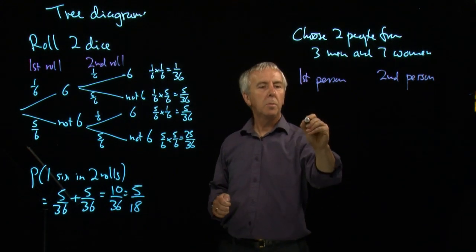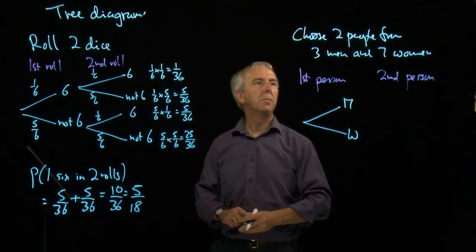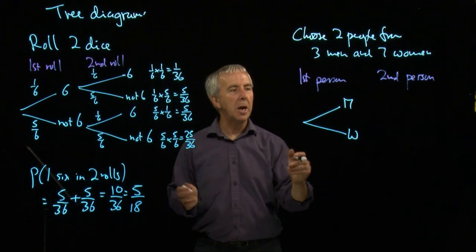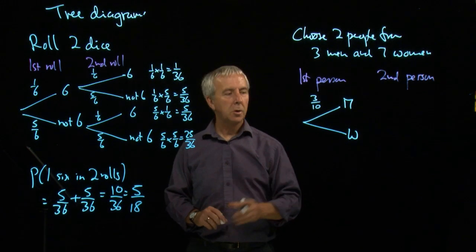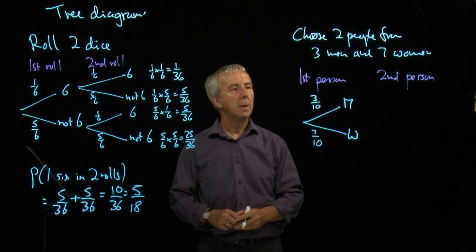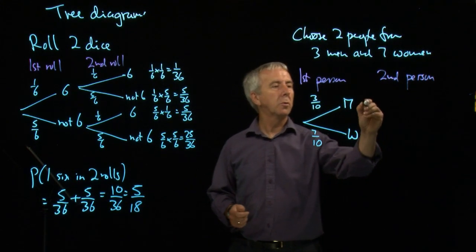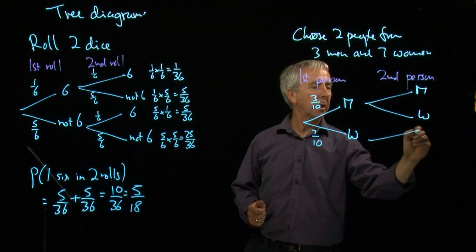First time, we choose a man or a woman. There are three men out of the ten, so the chance that we get a man is three-tenths. The chance that we get a female is seven-tenths. Then again, we can choose a man or a woman for our second person.